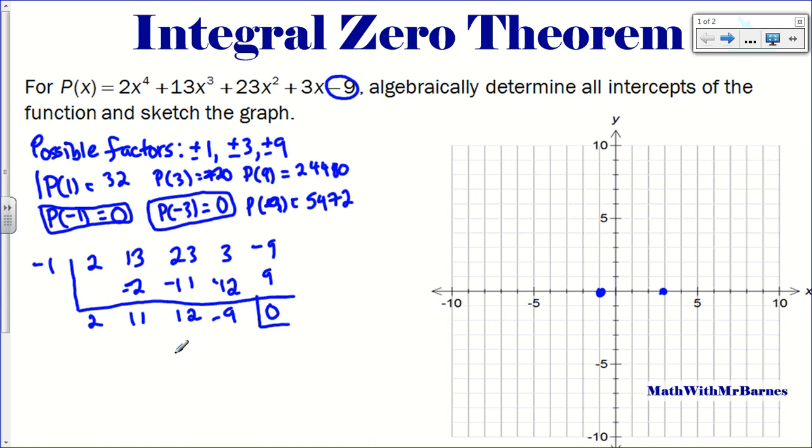Now we're left with a cubic. We could factor that if there was a means, or we could do integral zero theorem again. But we have another solution here. We're going to take that negative 3 and use synthetic division again. I'm going to take what I got left from this guy. I'm hoping to get 0 here. Bring down my 2. Negative 3 times 2 is negative 6. Add negative 11, subtract 6, that's 5. Multiply those two, that gives me negative 15. 12 plus negative 15 is negative 3. Negative 3 times negative 3 is 9, and that's 0.